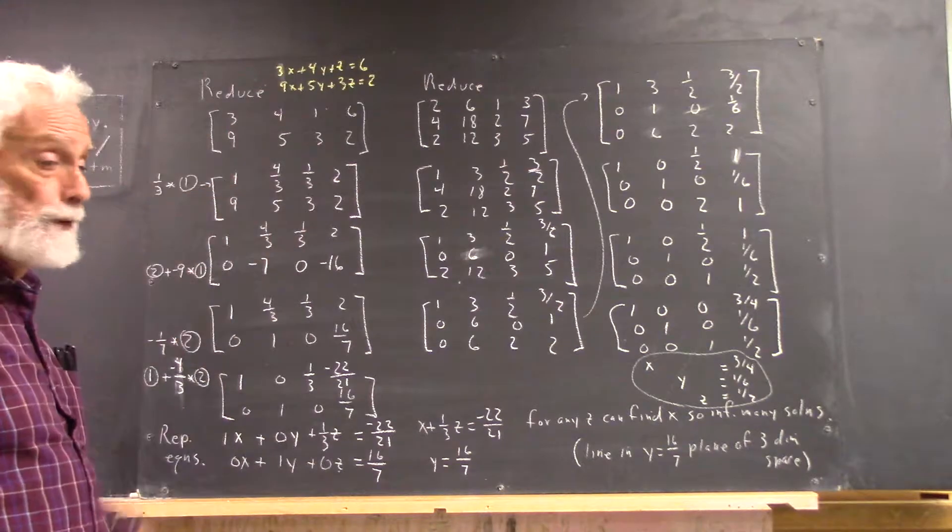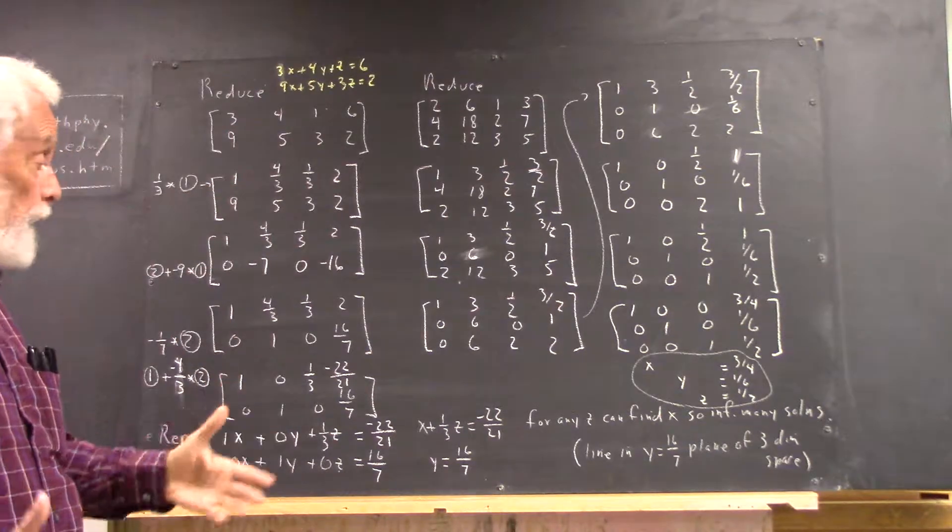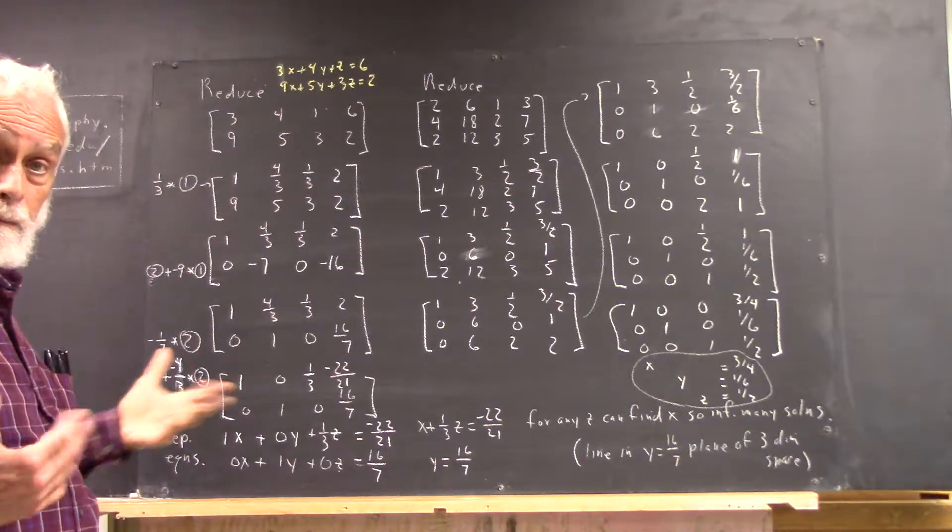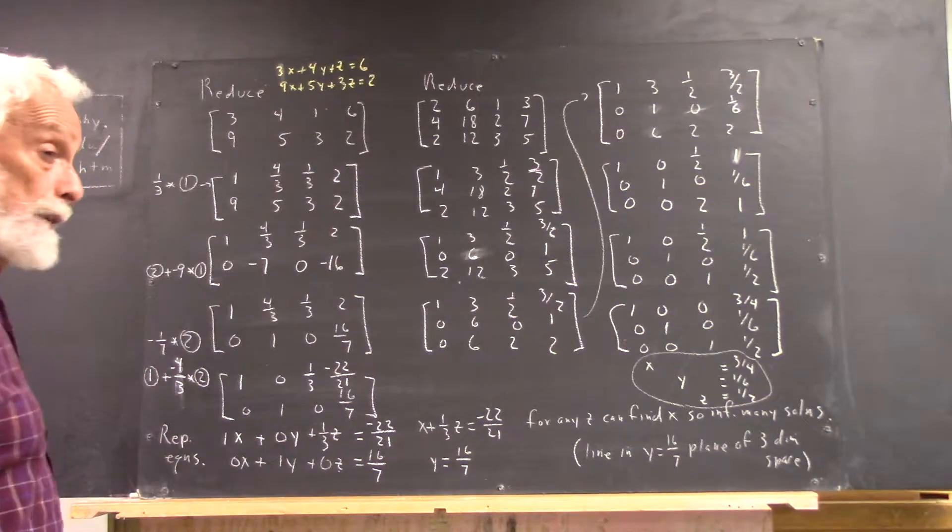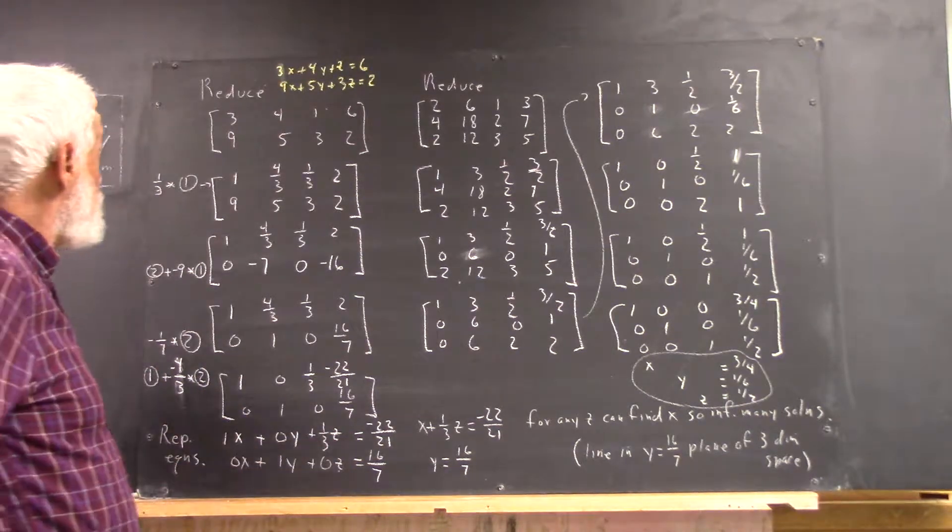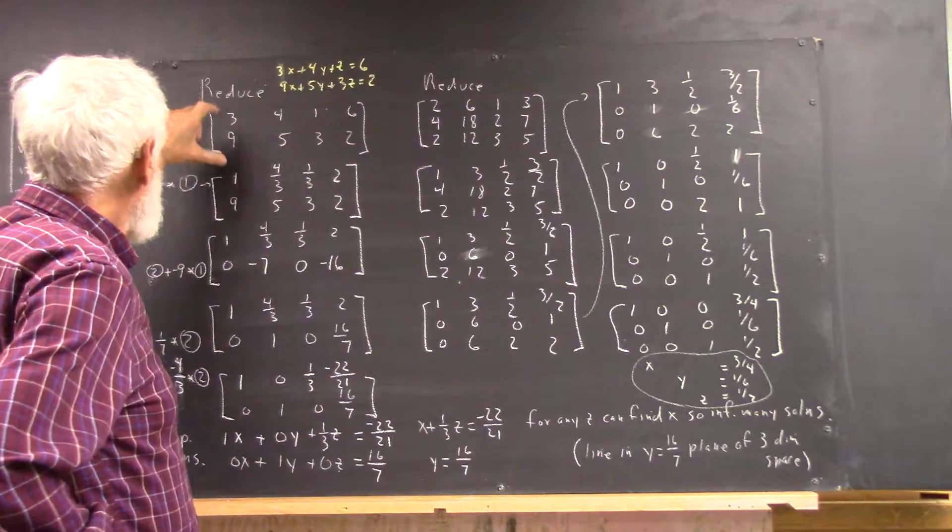So if we reduce these, it turns out that we actually find the line where the planes intersect, which is kind of neat. And I didn't mention that in class. So we reduce these.